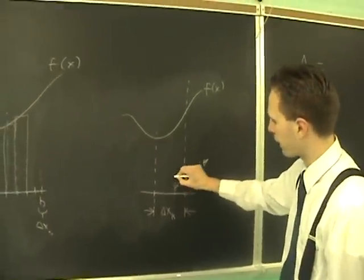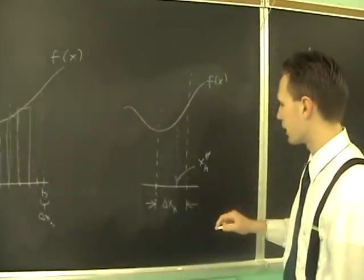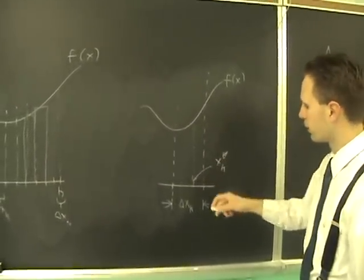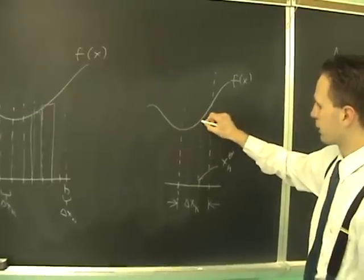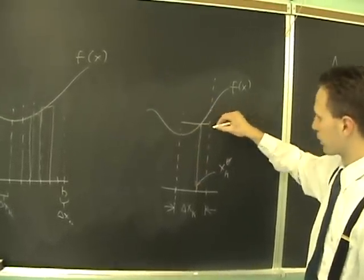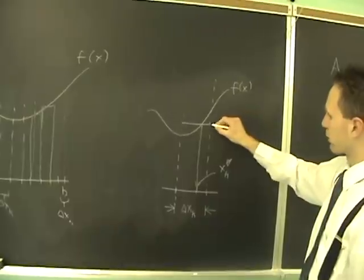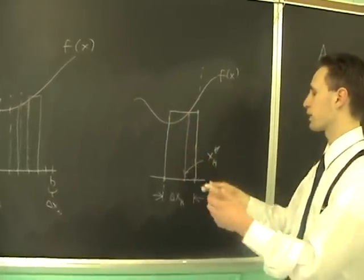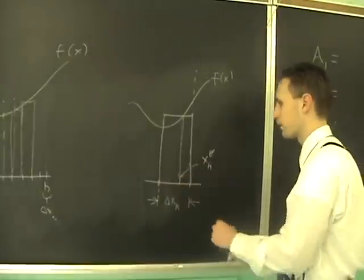X because it's an x value, k because it's in the kth sub-interval, and star because it's arbitrarily chosen. It doesn't matter where we pick our xk star—we're only after an approximation. f of xk star gives me this dimension here, so the area can be approximated by this rectangle.